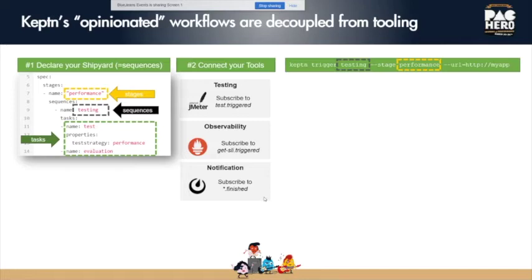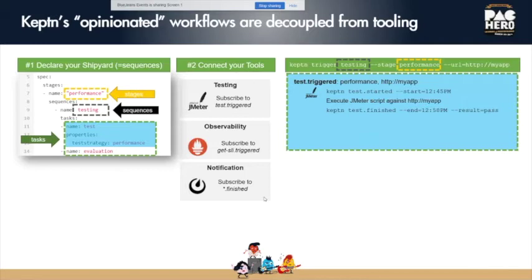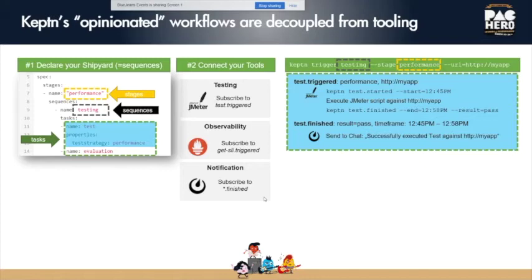You can say 'keptn trigger the testing sequence within the performance stage' and pass additional parameters like the application URL. Keptn takes the first task, sends a 'test.triggered' event, which JMeter picks up. JMeter says it's starting, executes the test, then sends back a finished event with timestamps and preliminary results. Keptn aggregates everything — you could have JMeter and chaos engineering running side by side — and then sends a 'tests.finished' event, which can automatically go to your chat tool.